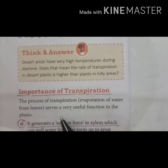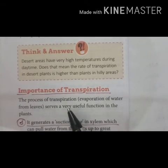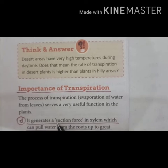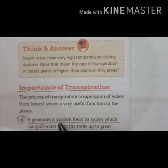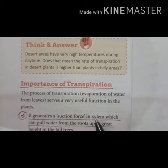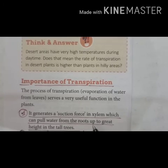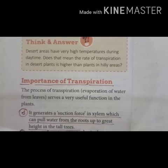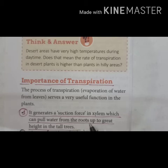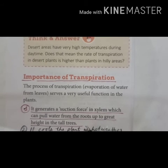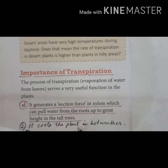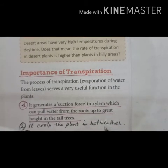Now next is the importance of transpiration. Transpiration generates a suction force in the xylem which can pull water from the roots up to a great height in tall trees — this is the transpiration pull, which also helps in ascent of sap. Another importance is that it cools the plant in hot weather.